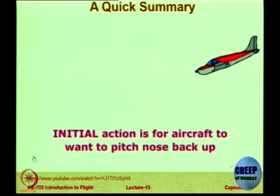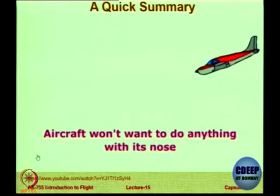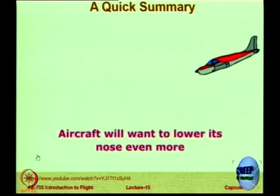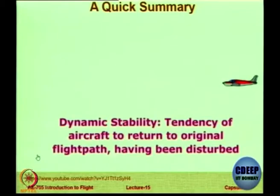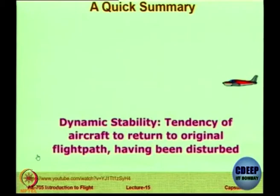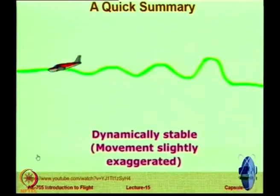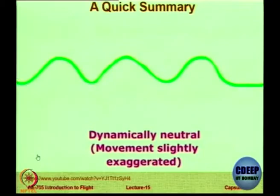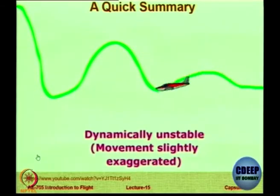A quick summary from a video clip: static stability is the aircraft's tendency to nose down or return. Dynamic stability is the overall tendency for the aircraft to return to its initial flight path. A dynamically stable aircraft will eventually return after a few oscillations. A dynamically neutral aircraft will carry on oscillating like a horrendous roller coaster.